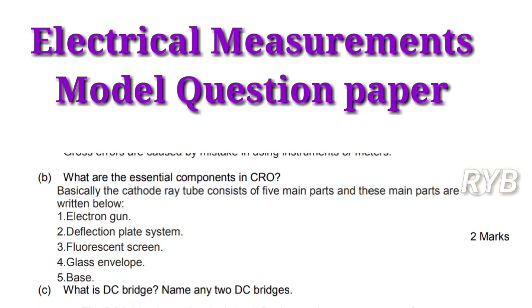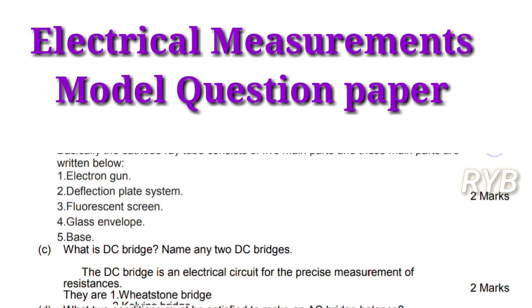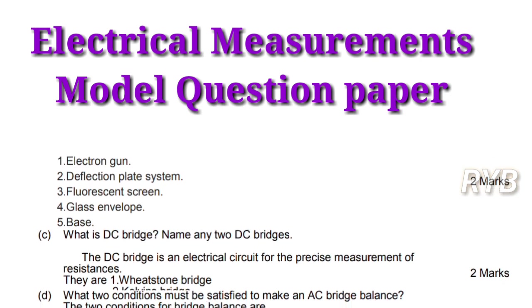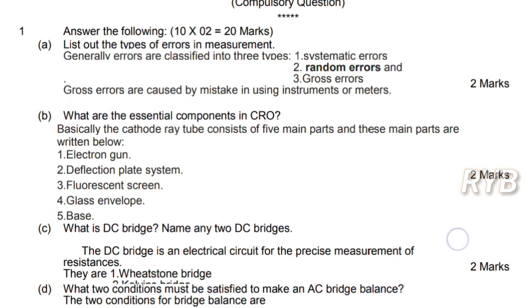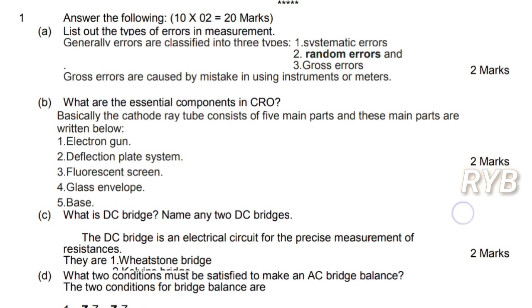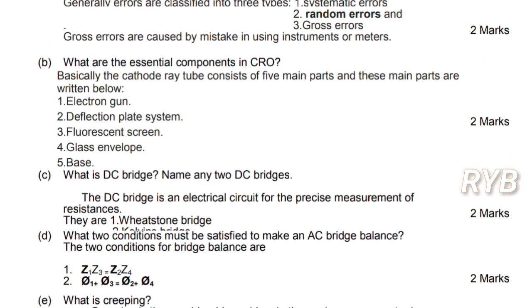What is a DC bridge? Name any two DC bridges. DC bridges are used to measure resistances. Wheatstone bridge and Kelvin's double bridge are the two DC bridges used to measure resistance. Wheatstone bridge is used for medium resistance; Kelvin's double bridge is used for low resistance, that is less than 1 ohm.